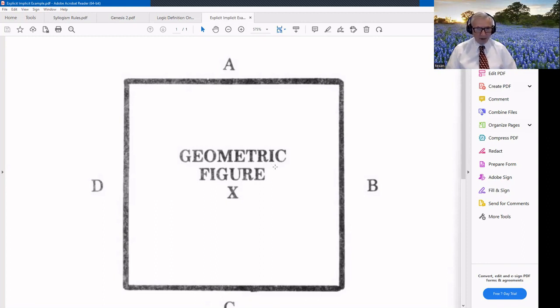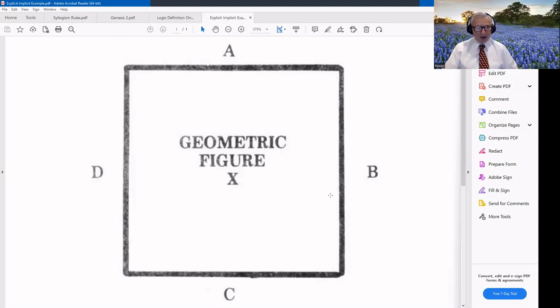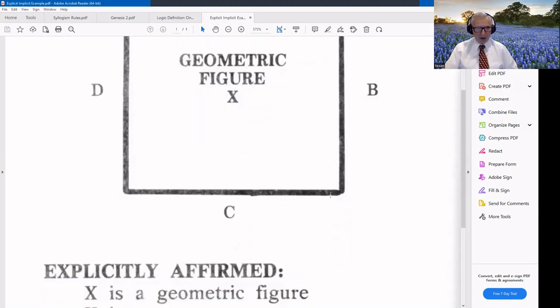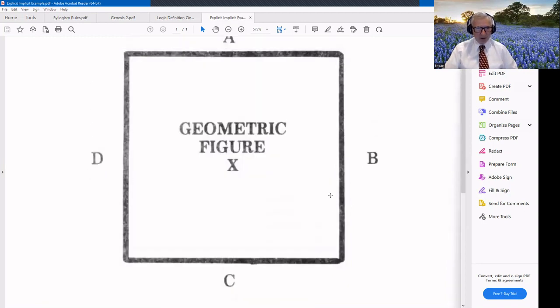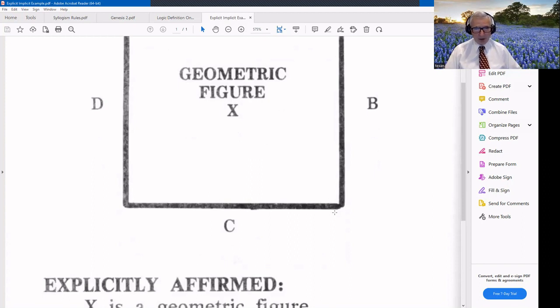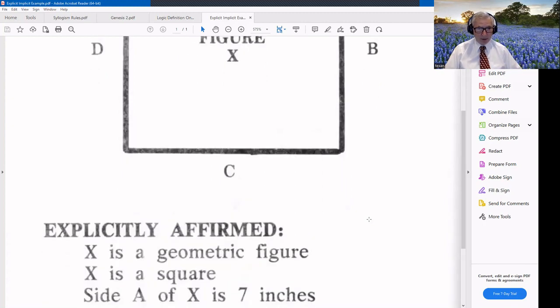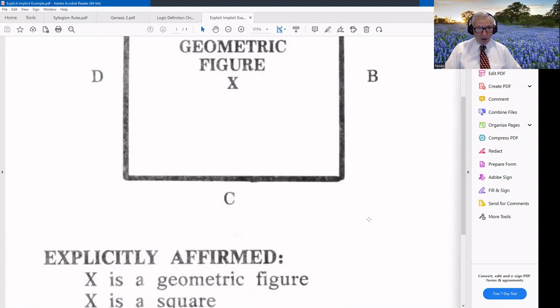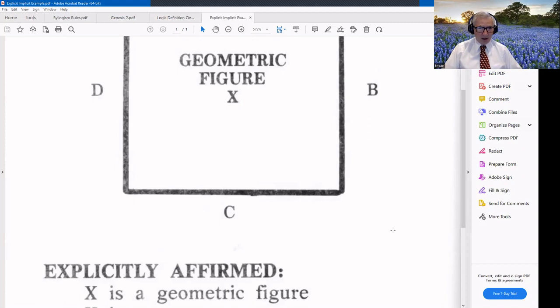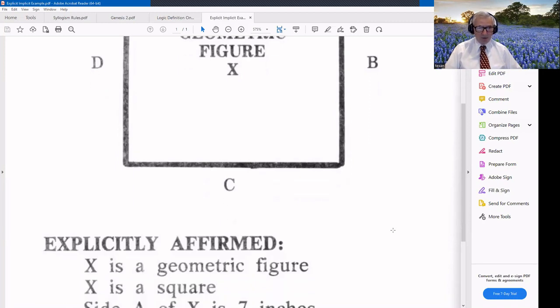Let's use an explicit and implicit example, and this one that you all know, and you may have not thought of it as being explicit or implicit. So we have here a geometric figure X, and it's got four sides: A, B, C, and D.